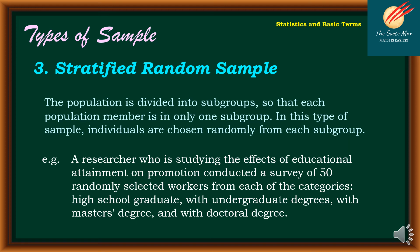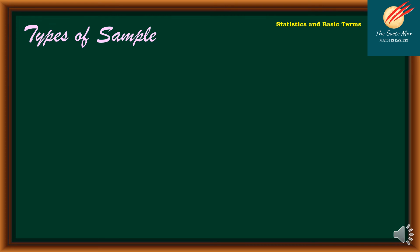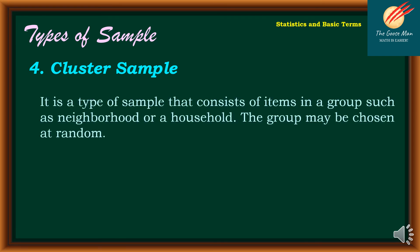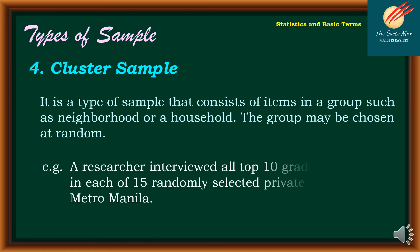The fourth type is cluster sample, a type that consists of items in a group such as neighborhood or household. The group may be chosen at random. For example, a researcher interviewed all top 10 Grade 11 students in each of 15 randomly selected private schools in Metro Manila.